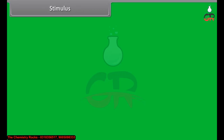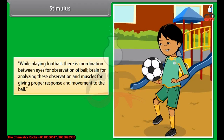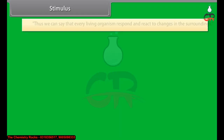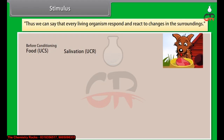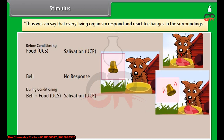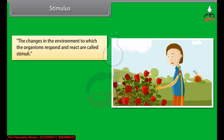While playing football, there is coordination between the eyes for observation of the ball, the brain for analyzing these observations, and the muscles for giving proper response and movement to the ball. The changes in the environment to which organisms respond and react are called stimuli.